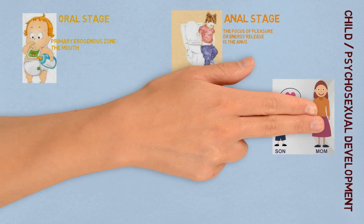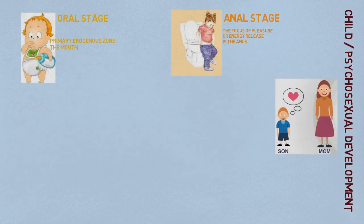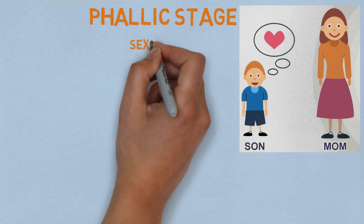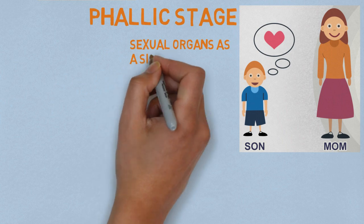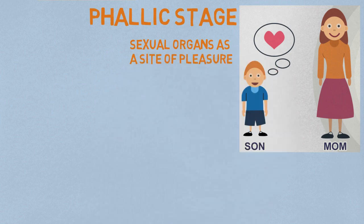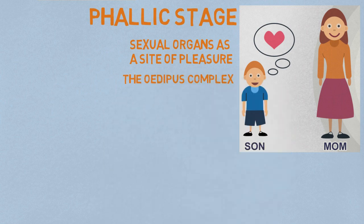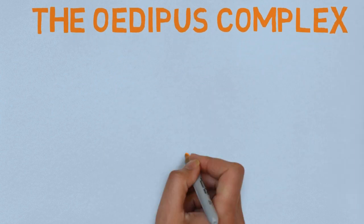Then the focus of pleasure shifts to the genitals. This is the phallic stage. The young child develops an interest in its sexual organs as a site of pleasure and develops a deep sexual attraction for the parent of the opposite sex and a hatred of the parent of the same sex, better known as the Oedipus complex. This, however, gives rise to feelings of guilt in the child.